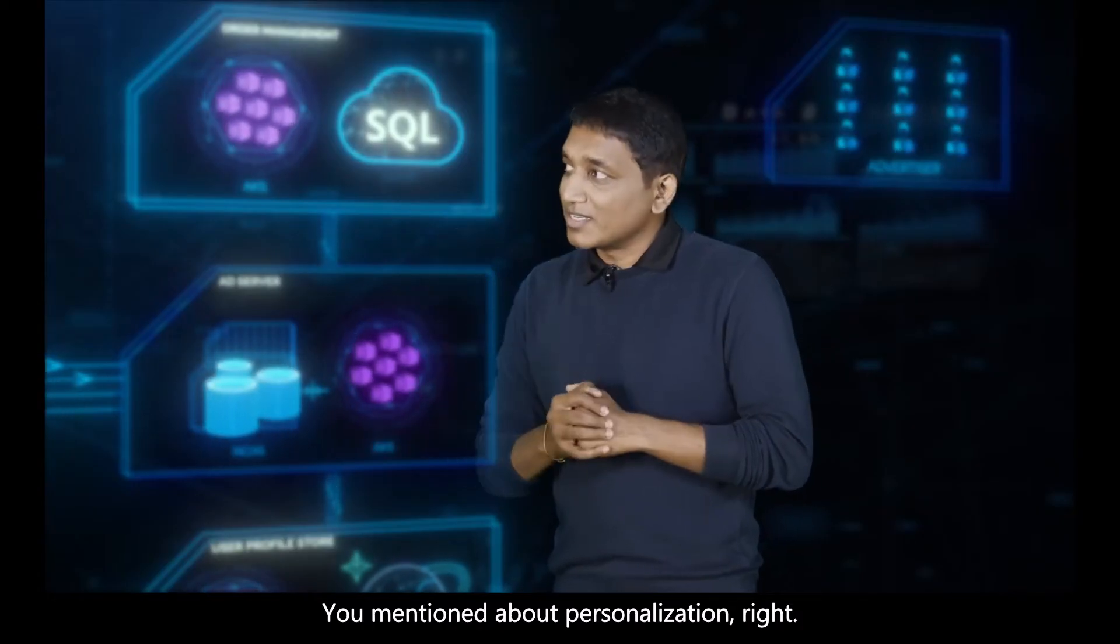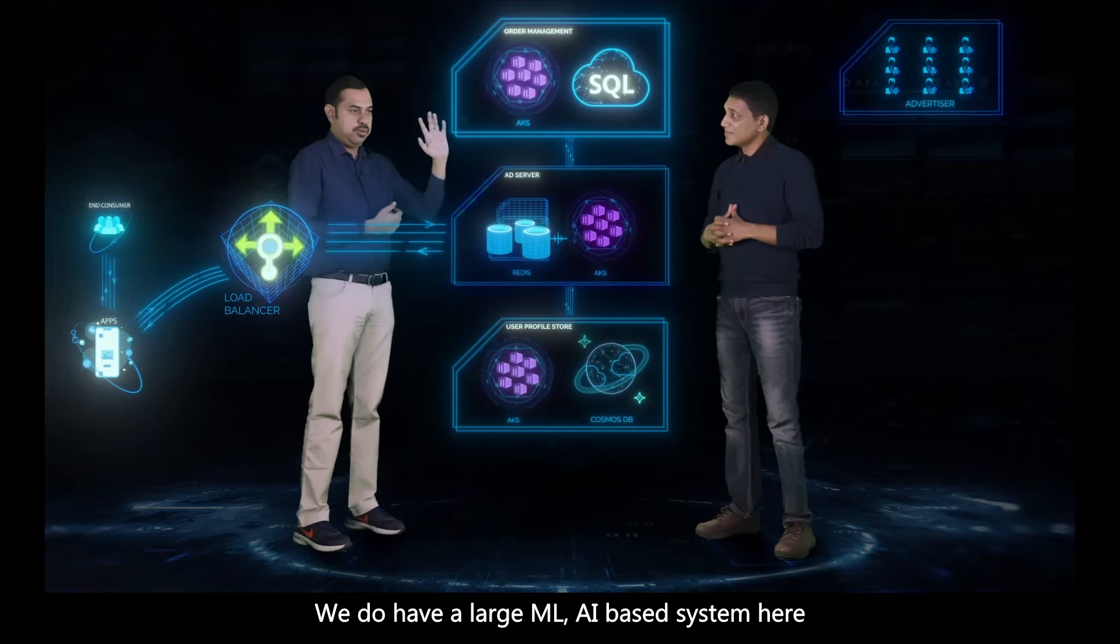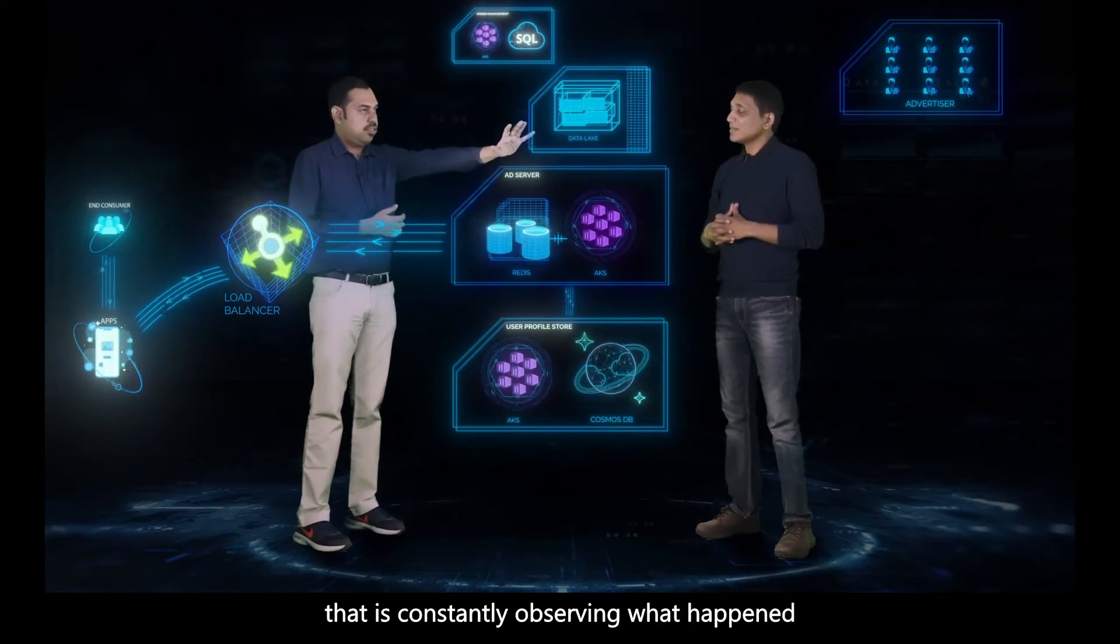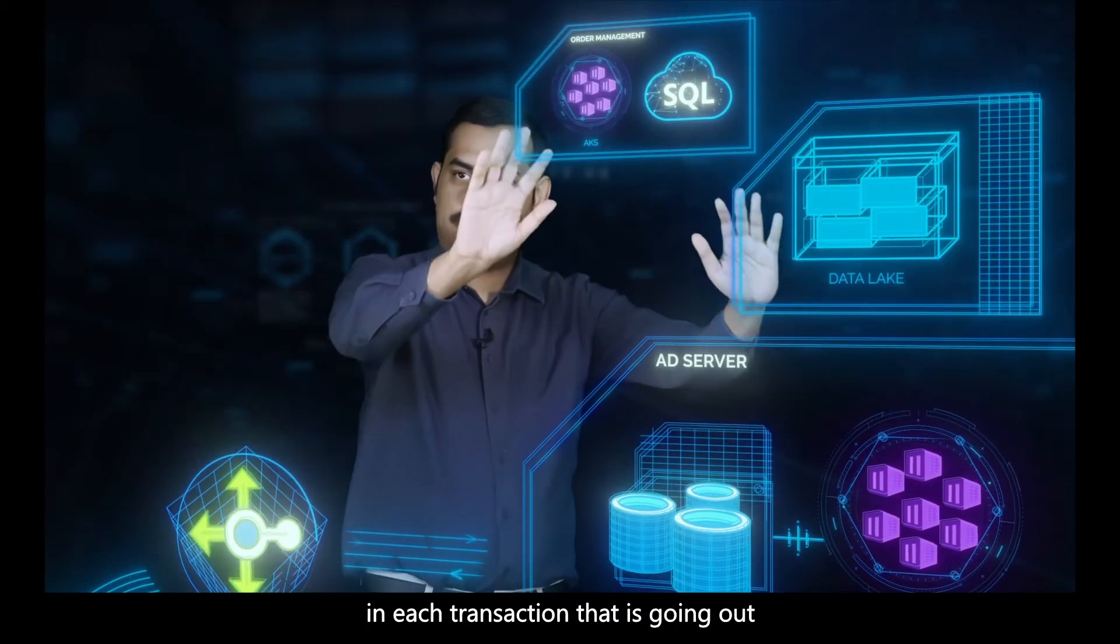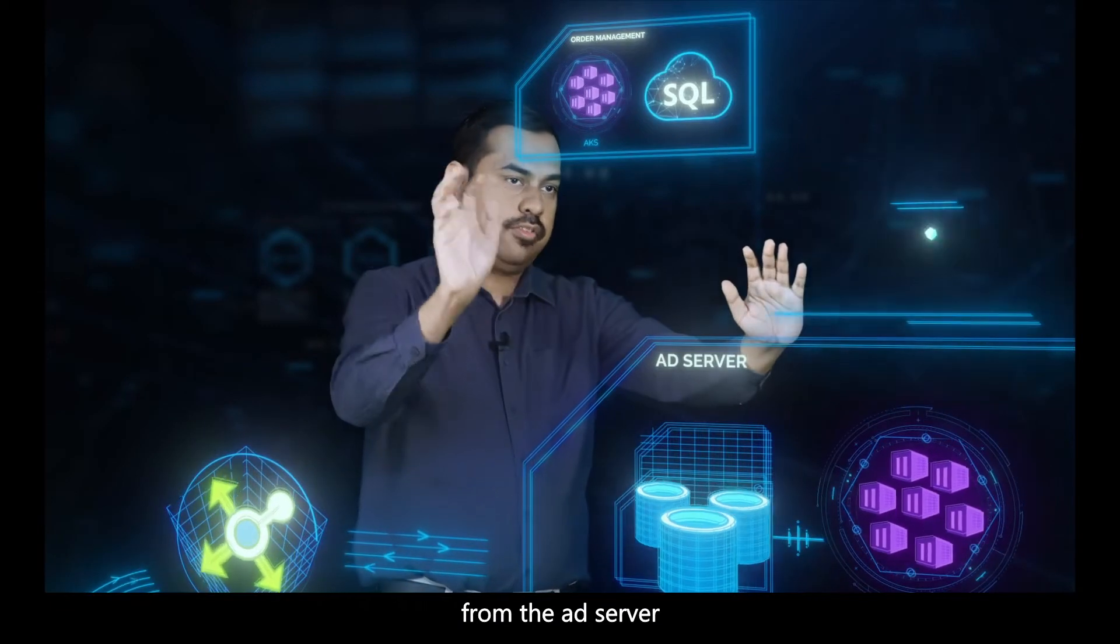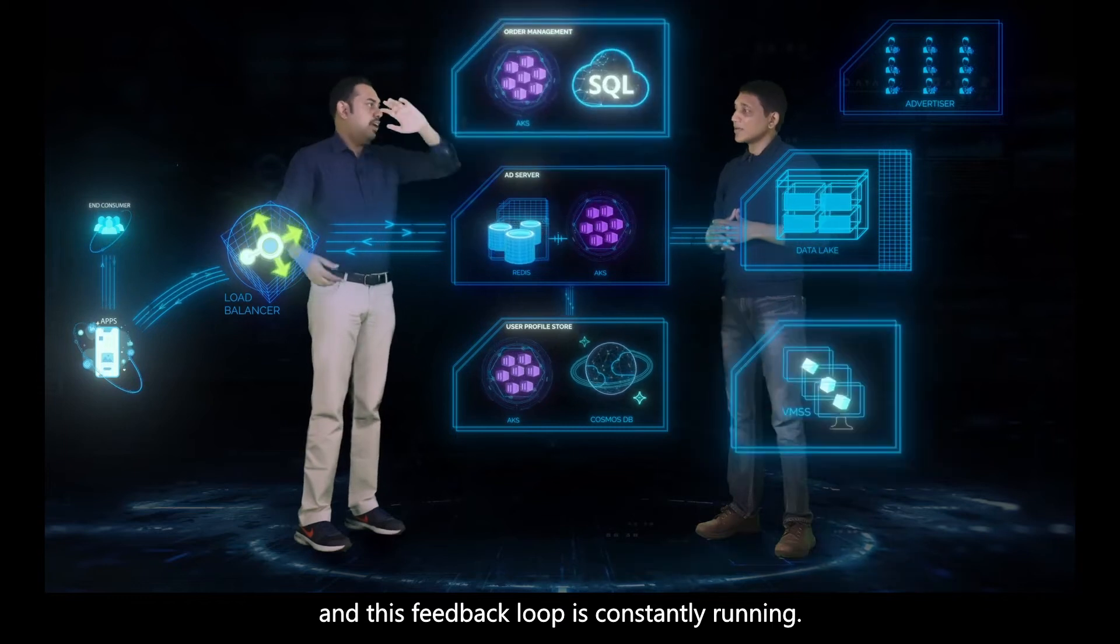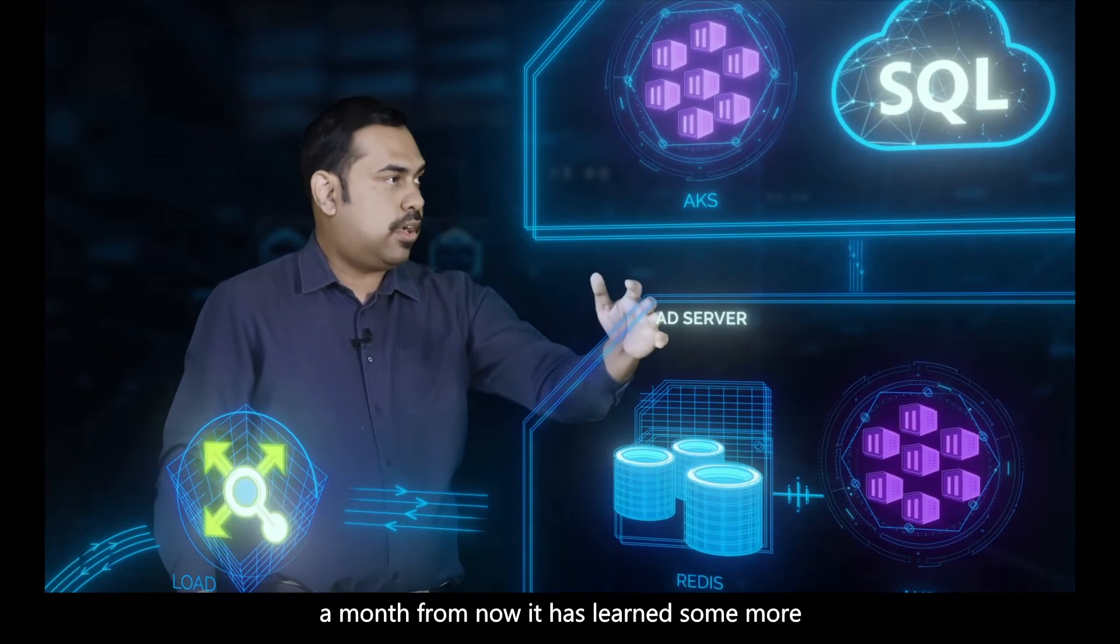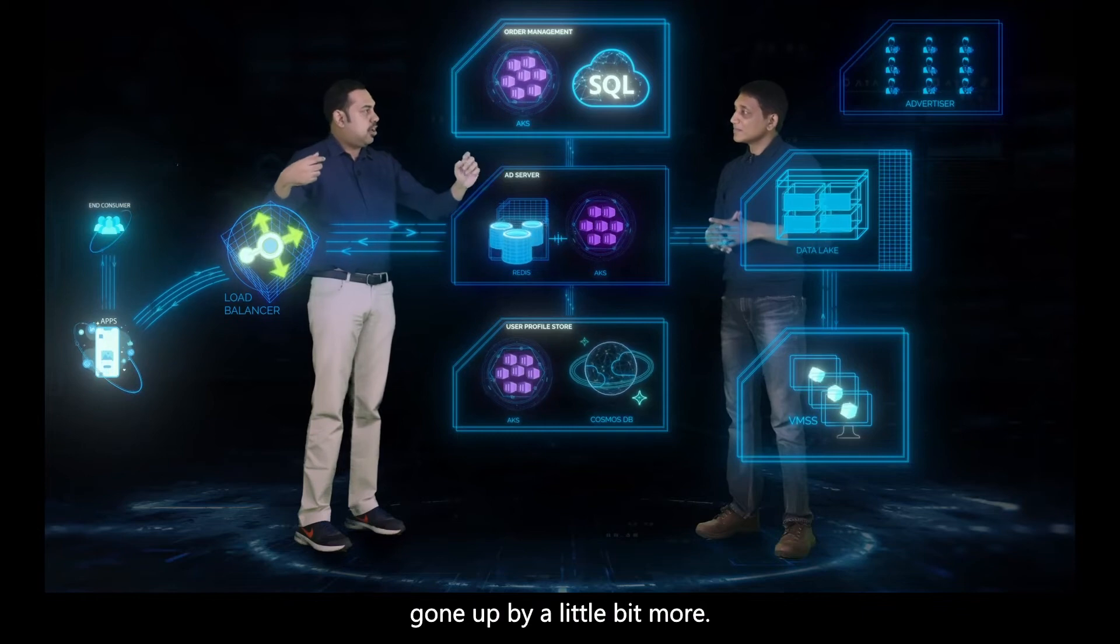You mentioned personalization, right? How do we ensure relevance of these ads being served in the ever-evolving mobile economy? We have a large ML/AI-based system here that's constantly observing what happened in each transaction going out from the ad server back to the end users. That data is getting captured from the ad server and reaching the feedback system. This feedback loop is constantly running, so if you come into the system a month from now, it has learned more about the end users and the relevance has gone up.